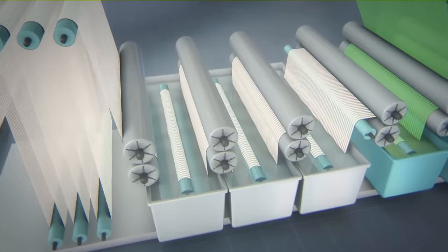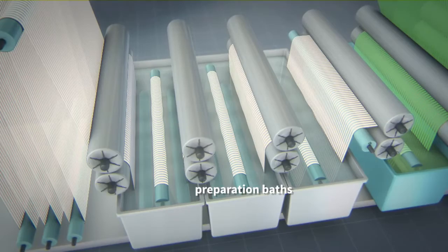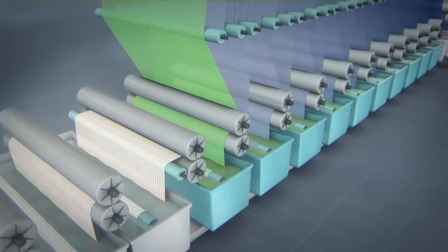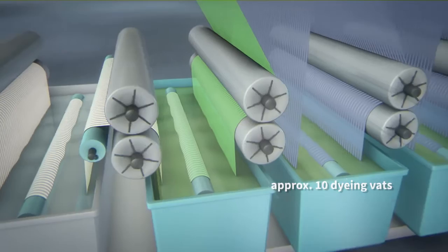After spinning, up to 4,500 cotton threads are simultaneously pre-wetted, degreased with chemicals, and cleaned in several preparation baths. Now the actual dyeing process begins, with an average of 10 dyeing vats.